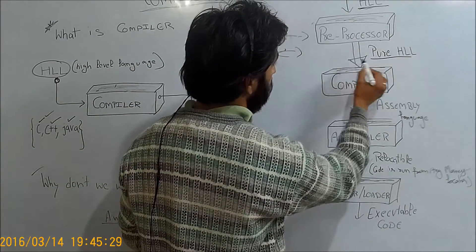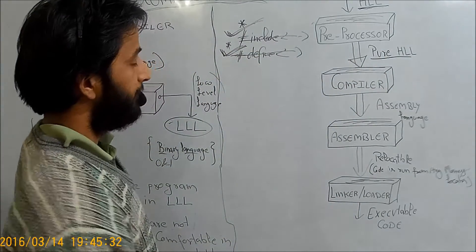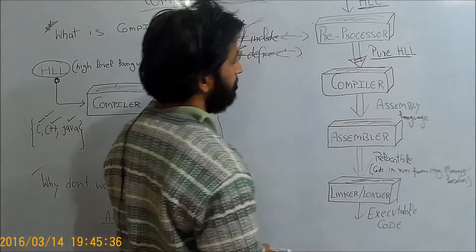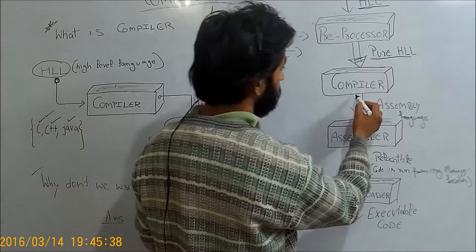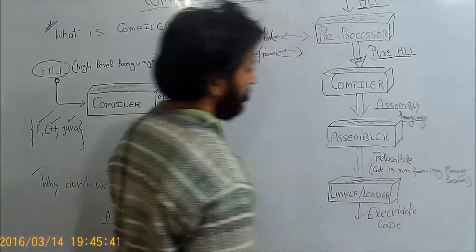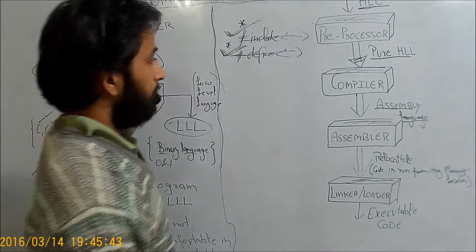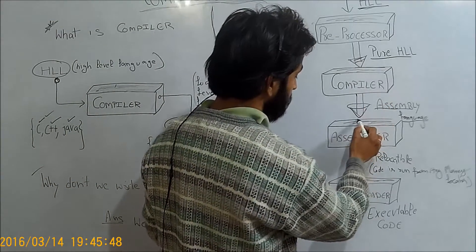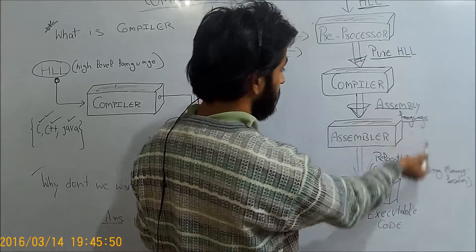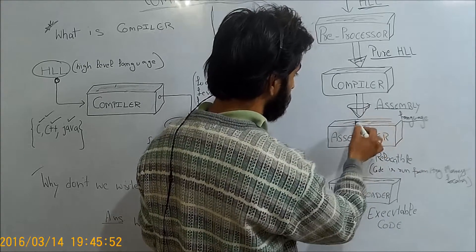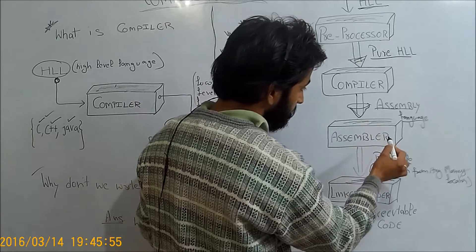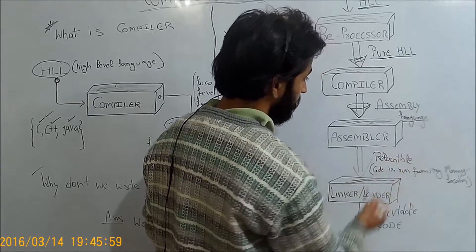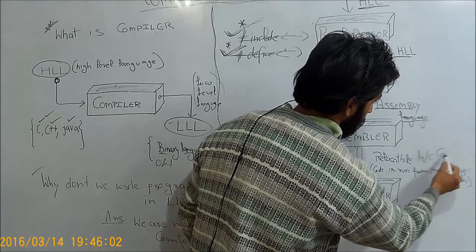That pure high-level language is fed to the compiler, and the compiler takes that pure high-level language code and converts it to assembly language code. After that, the input to the assembler is assembly language, and the assembler takes that assembly language and converts it to relocatable machine code.